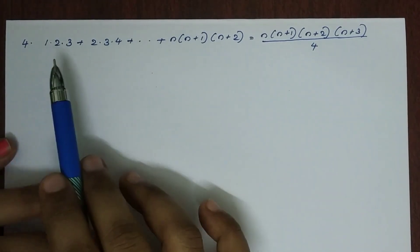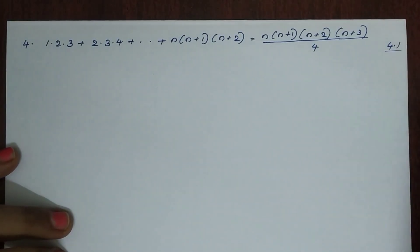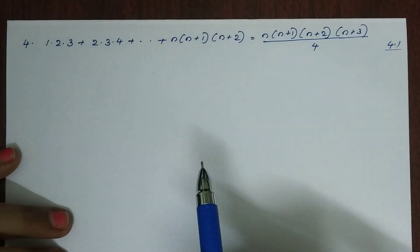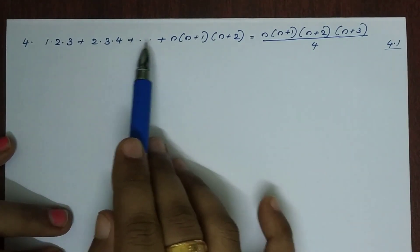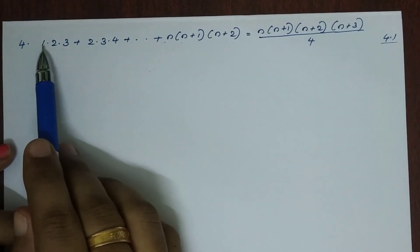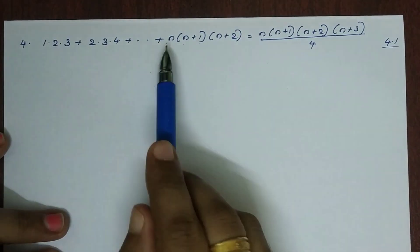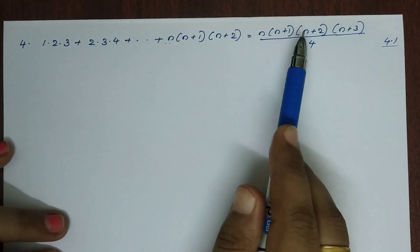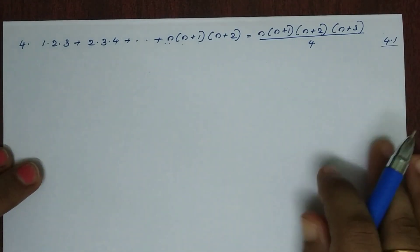Hi everyone, this is exercise 4.1, problem 4. I am going to prove this: 1 into 2 into 3, plus 2 into 3 into 4, plus etc., plus n into n plus 1 into n plus 2, is equal to n into n plus 1 into n plus 2 into n plus 3, the whole divided by 4.